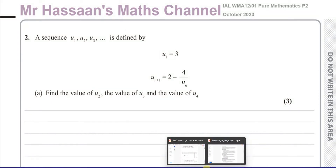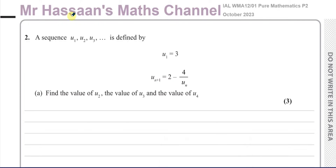Welcome back. This is Mr. Hassan's Maths Channel. I'm now answering question number two from the October 2023 Pure Mathematics P2 International A-Level Excel exam. This question is about recurrence formulae. You have a recurrence formula where to find the next term you have to follow this rule: 2 minus 4 divided by the previous term.